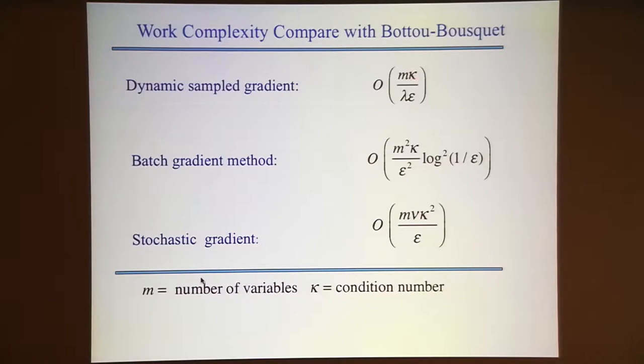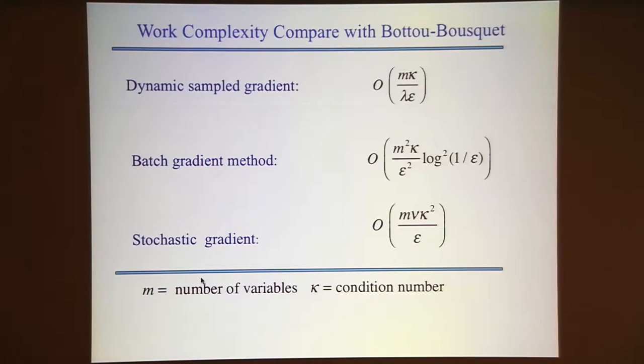At the end of the Bottou-Bousquet paper, there's a nice table showing that the best method with the best complexity is the stochastic gradient method. But that was for algorithms using a fixed batch size—stochastic gradient descent using one sample point and the batch method using all information. What about a method that starts with a small sample size and keeps increasing it as you progress? If we do that summation of all the work as iterations progress, we obtain a complexity bound of 1 over epsilon. That factor epsilon squared has disappeared—the theoretical advantage of stochastic gradient descent has now disappeared by the use of dynamic sample sizes.